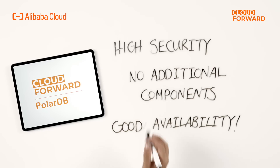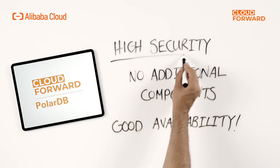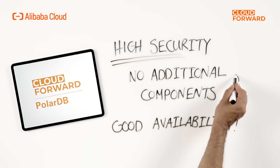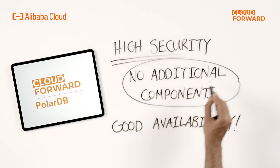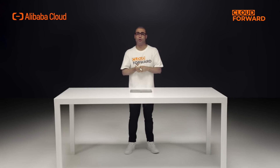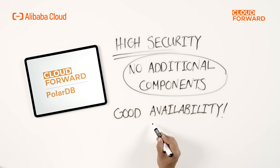Furthermore, the read and write splitting feature of PolarDB is built on top of existing secure links, with no additional components to consume, effectively reducing latency and increasing processing speed. The module will also perform health checks on all nodes in the cluster automatically, to improve database system availability.